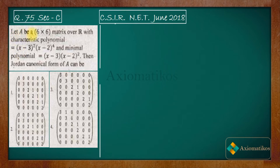Let A be a 6×6 matrix over R with characteristic polynomial (x−3)²(x−2)⁴ and minimal polynomial (x−3)(x−2)². The question asks what the Jordan canonical form of A can be, and we are given options to choose from.